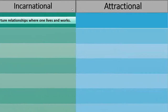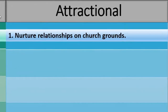Number one for attractional church: the life of the church revolves around the main grounds. It is usually a permanent, multi-purpose building with a sign or billboard to draw the attention of people passing by to attend worship services. Relationships are built usually before or after services or at one of the church-sponsored events.